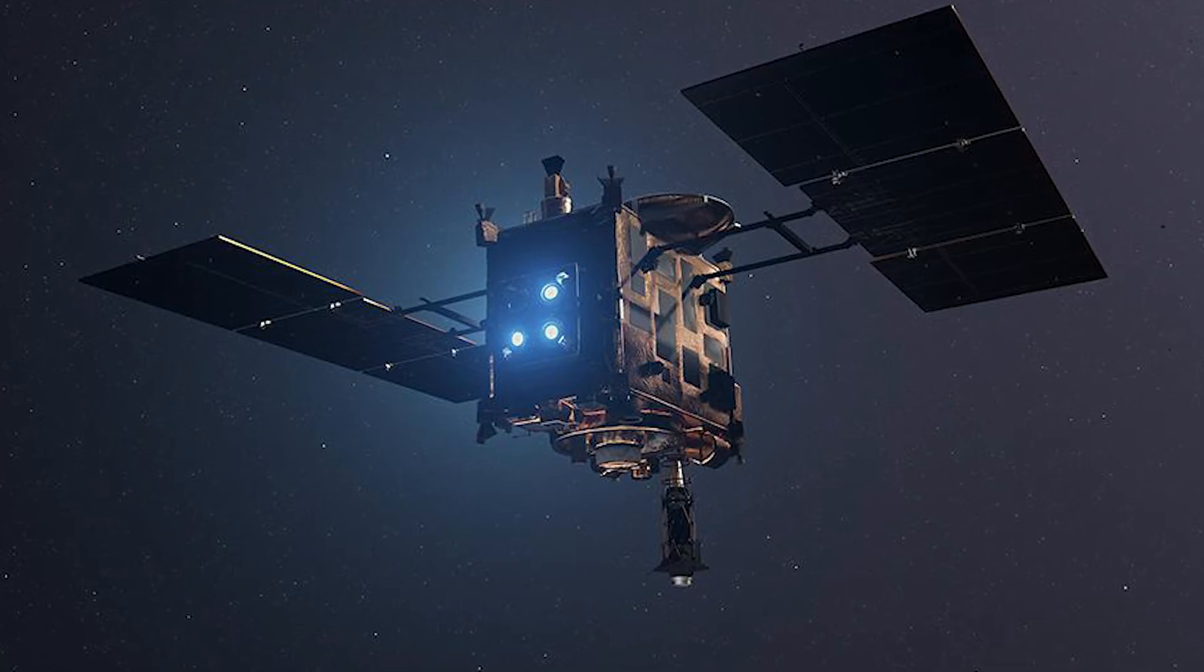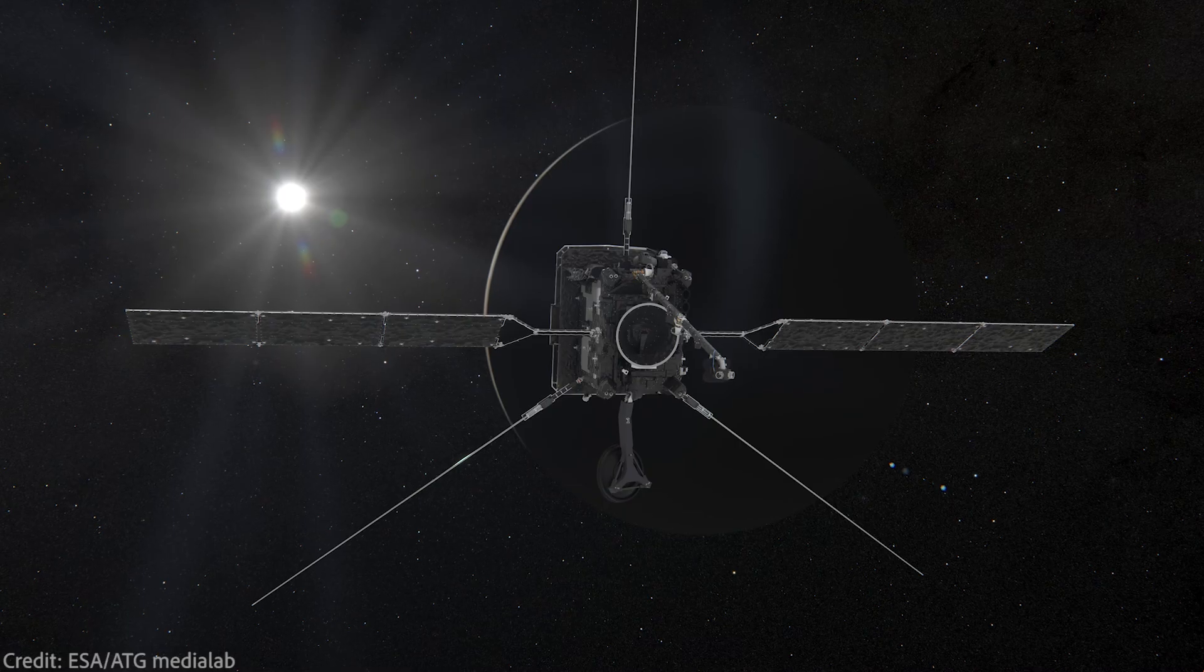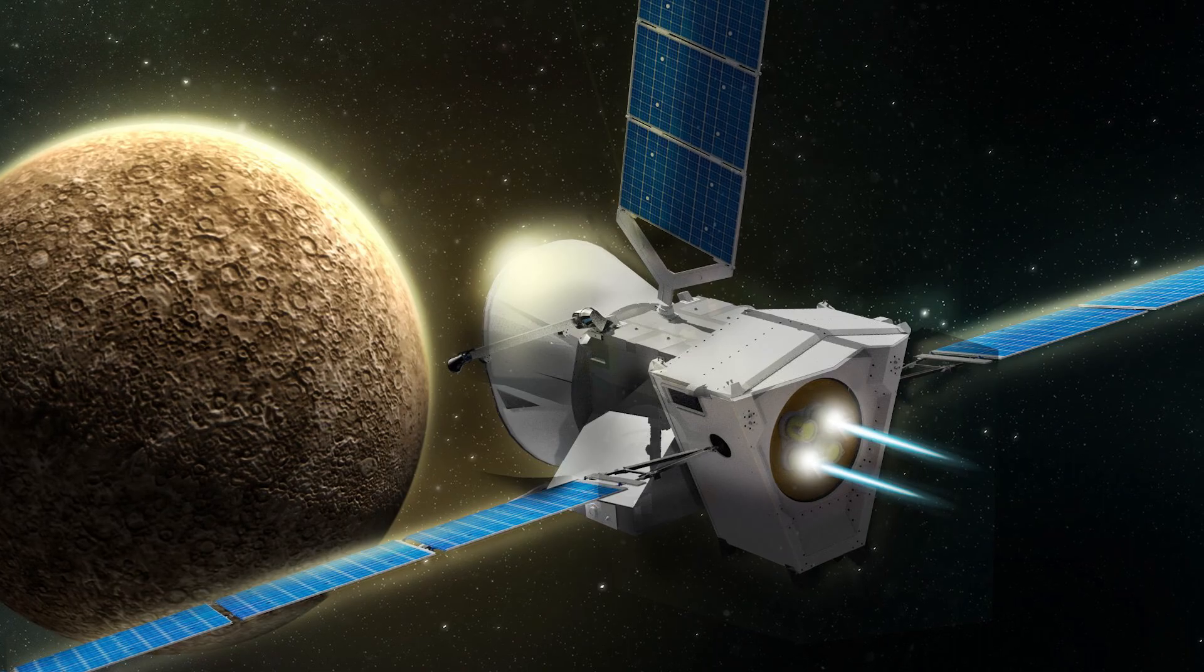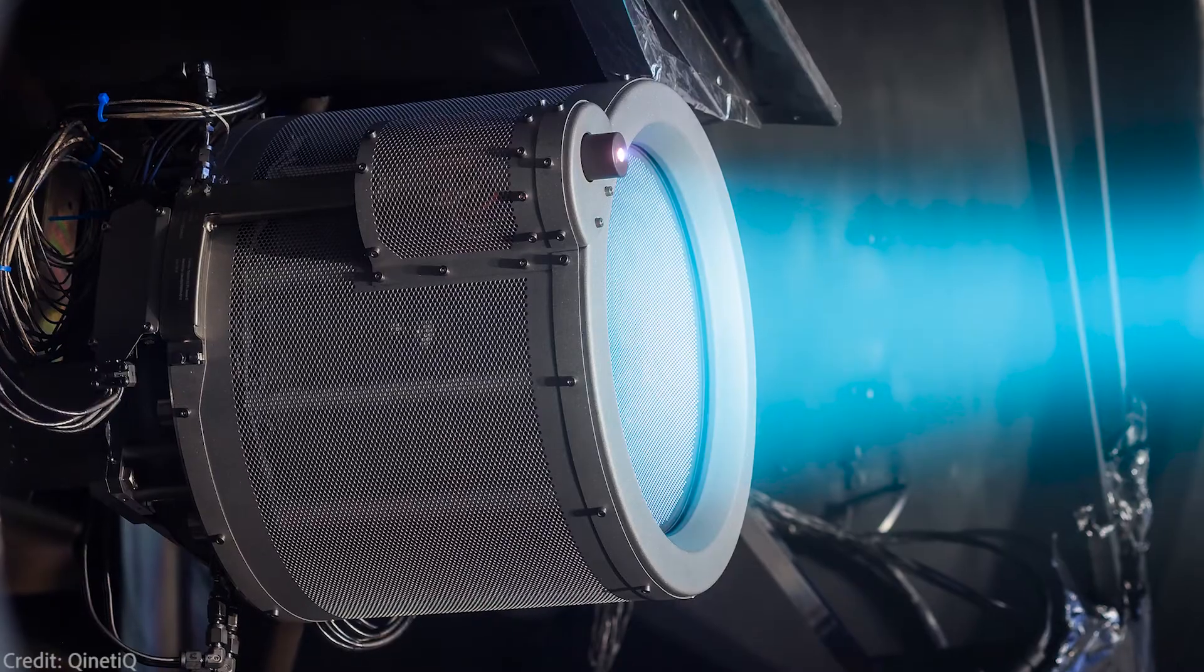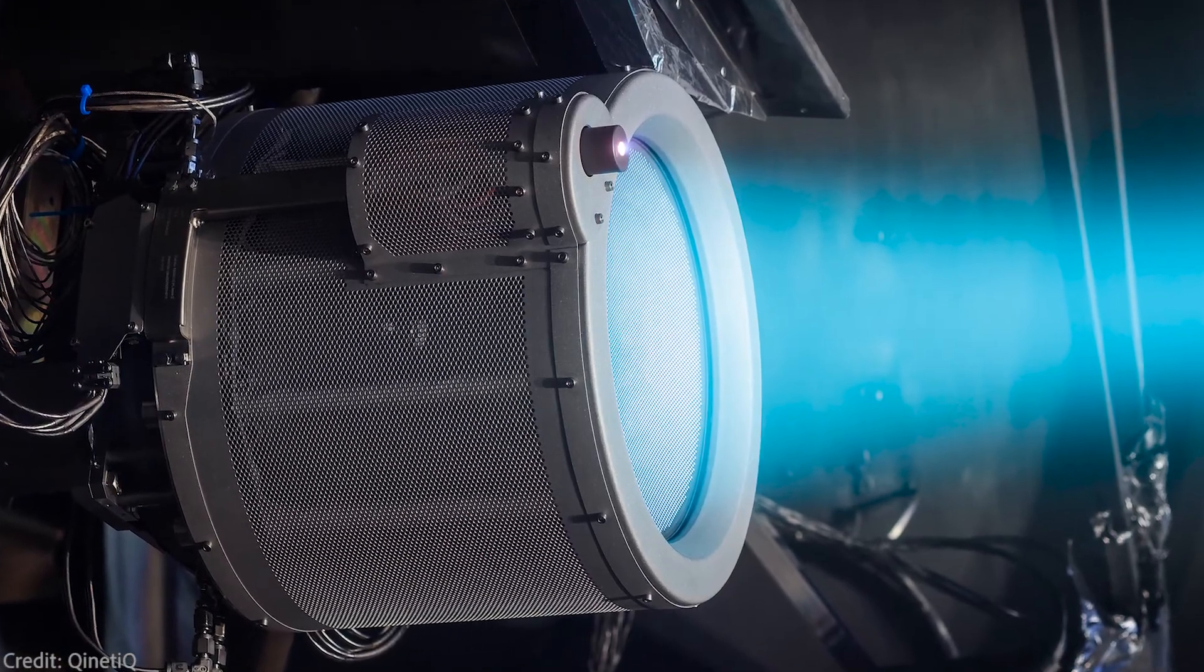Both Japanese spacecraft Hayabusa and Hayabusa2, European spacecraft Solar Orbiter and BepiColombo, which is now on its way to Mercury. These are its thrusters. And they provide thrust of at least 250 millinewtons.